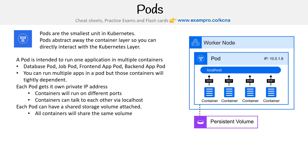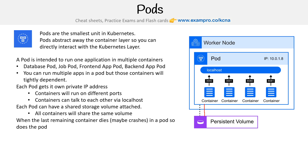Each pod can have a shared storage volume attached, and all containers will share the same volume. You see this line here drawn from the pod to a persistent volume, a PV. We'll talk about persistent volumes and persistent volume claims later.